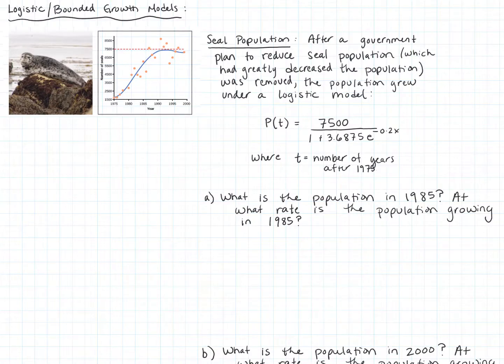Let's take a look at a second example. We're still exploring derivatives as rates of change, but now I want to pull an example from the natural sciences and explore what's called a logistic or bounded growth model. Exponential growth is straightforward to differentiate, so let's look at a logistic growth problem with a bit more complexity.